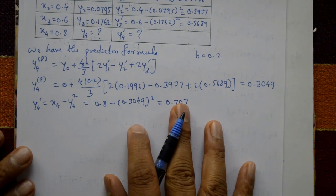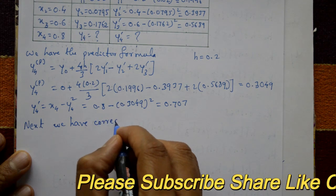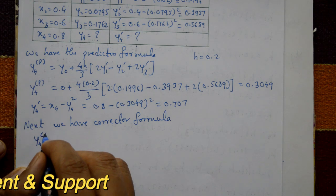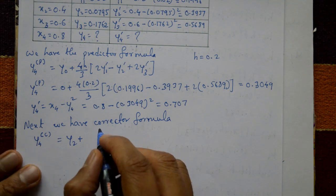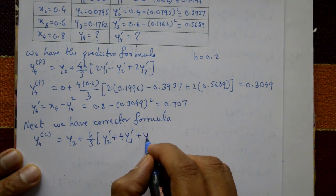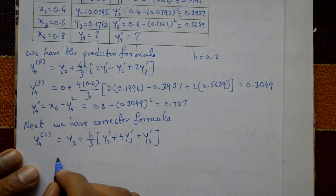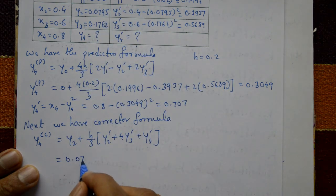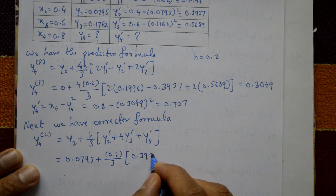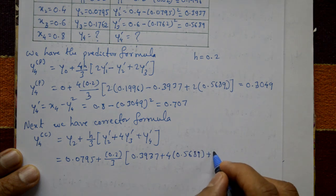Next we apply the corrector formula. The corrector formula is: y4(C) = y2 + (h/3) × (y2' + 4y3' + y4'). Substituting: y4(C) = 0.0795 + (0.2/3) × (0.3937 + 4 × 0.5689 + 0.707).